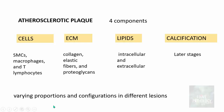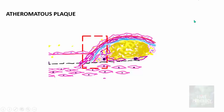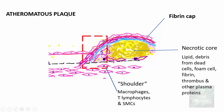Varying proportions and configurations exist in different lesions — the cells, extracellular matrix, and lipids can be in variable proportions. In some plaques the matrix is more predominant; in others the lipid or cellular component is more. This illustrated image depicts the structure of an atherosclerotic plaque. There is a fibrous cap made up of collagen. Then a necrotic core composed of fat and cholesterol. The shoulder region contains lots of inflammatory cells — macrophages, T-lymphocytes, and smooth muscle cells. The necrotic core contains lipid, debris from dead cells, foam cells, fibrin, thrombus, and other plasma proteins.